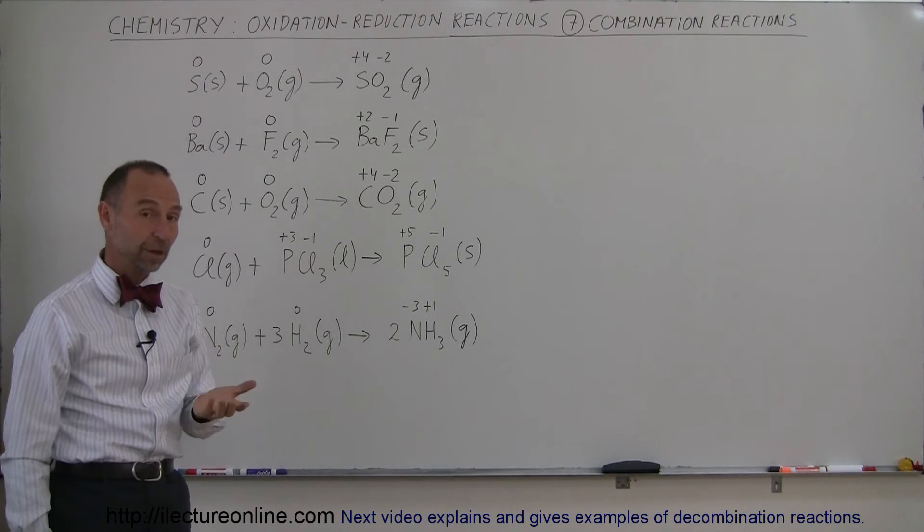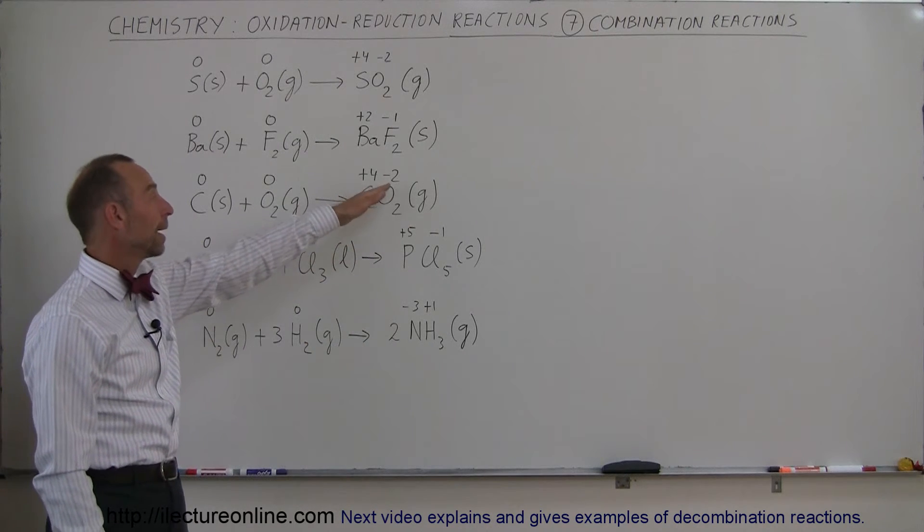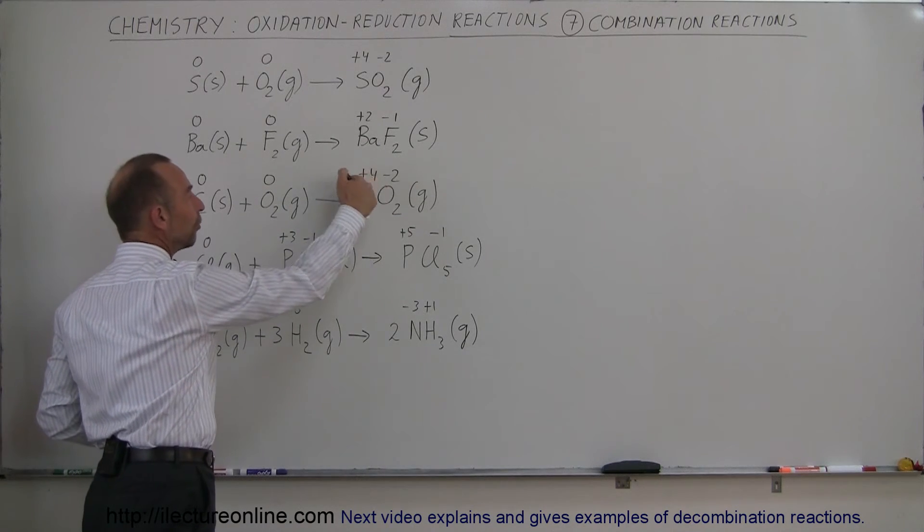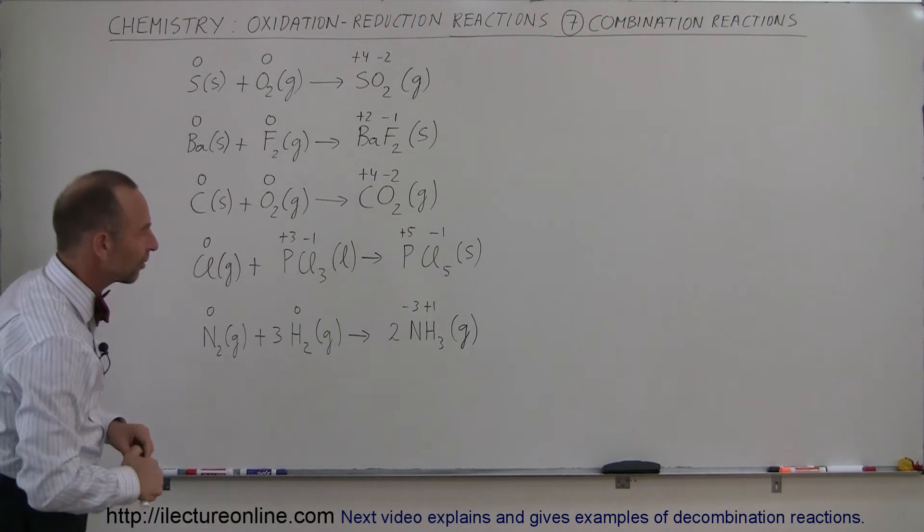Carbon gets oxidized to plus 4. And oxygen minus 2 being reduced to minus 2. There's two of them. So 2 times minus 2 is minus 4. And again it's balanced on both sides of the equation.